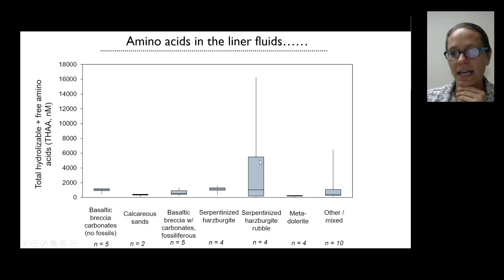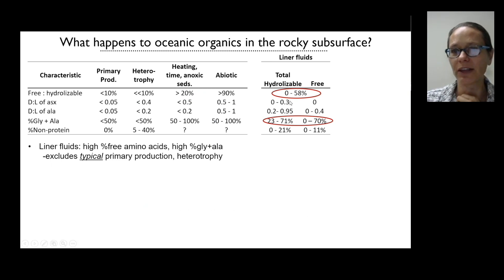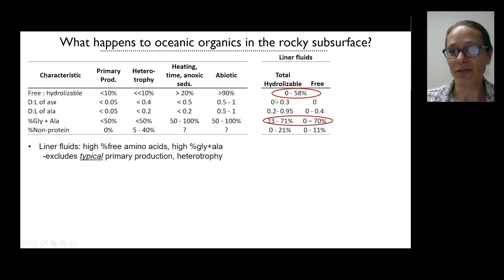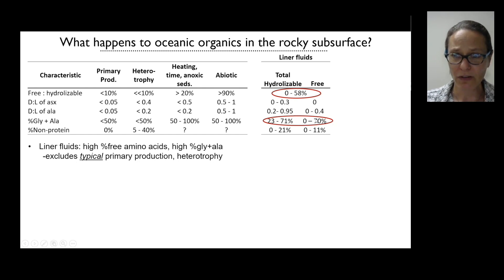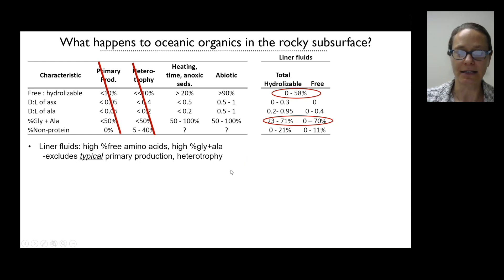Looking at amino acids in our liner fluids: first, the locations with elevated amino acids are different from where we find high acetate concentrations. In the liner fluids, we tend to get very high free amino acids as opposed to those bound in peptides and proteins, and very high abundances of glycine and alanine. So high percentages of free amino acids and high glycine plus alanine abundances — this combination excludes typical primary production and heterotrophy as a first explanation.